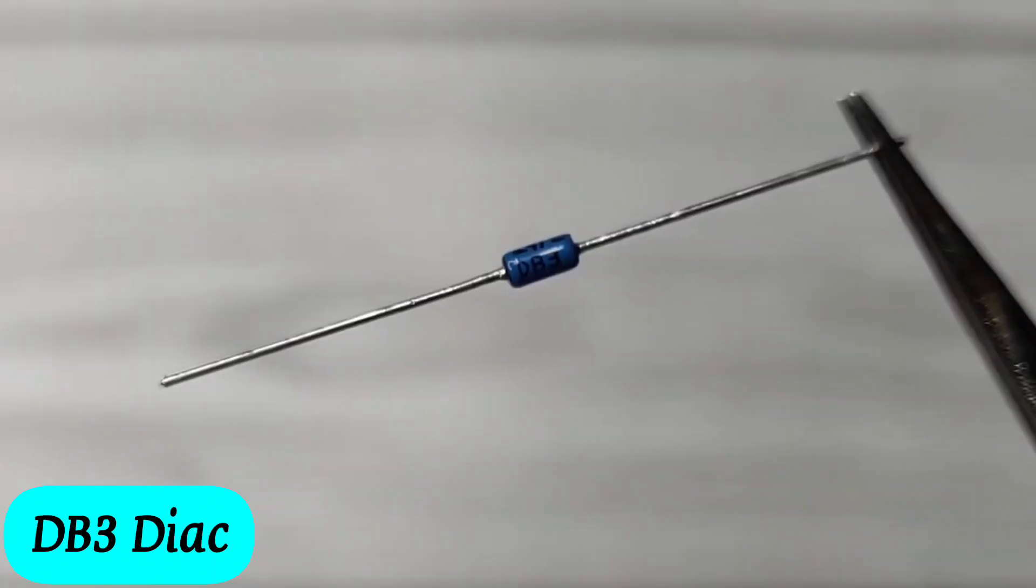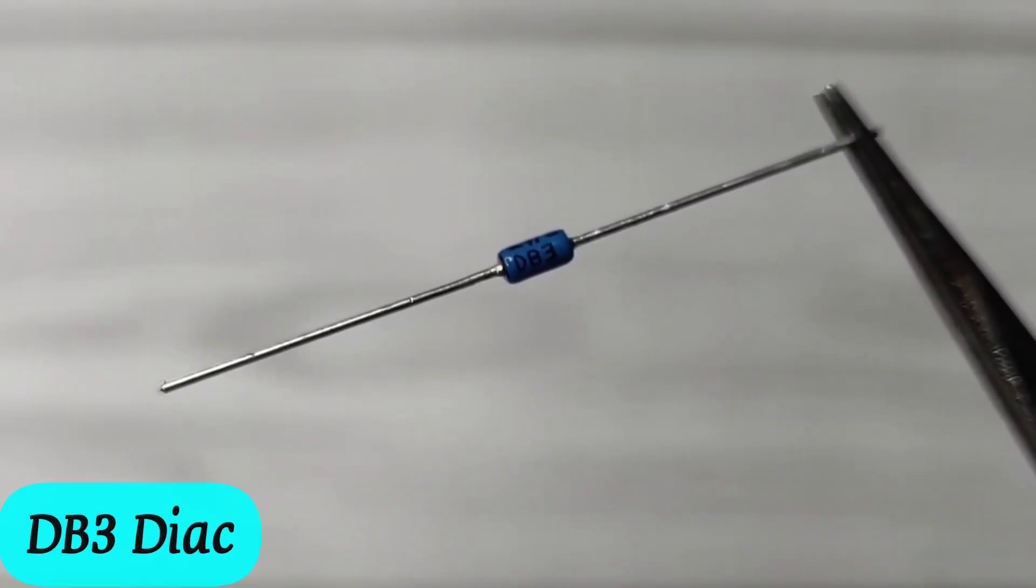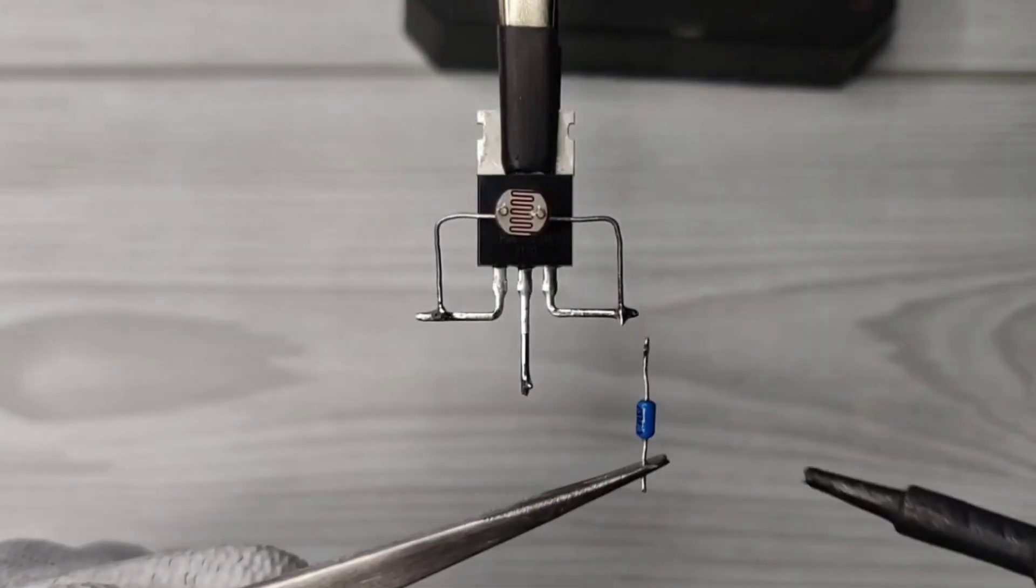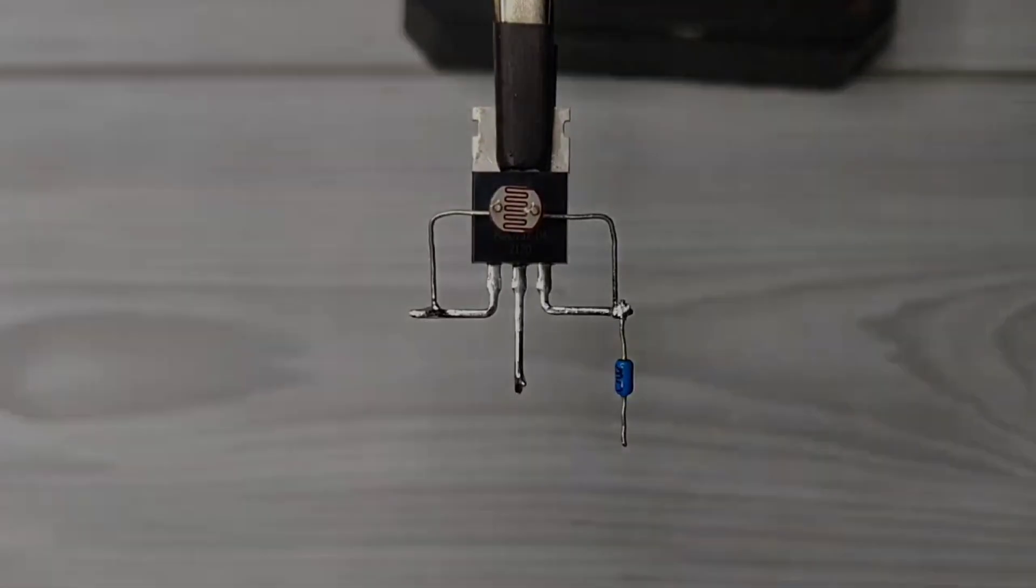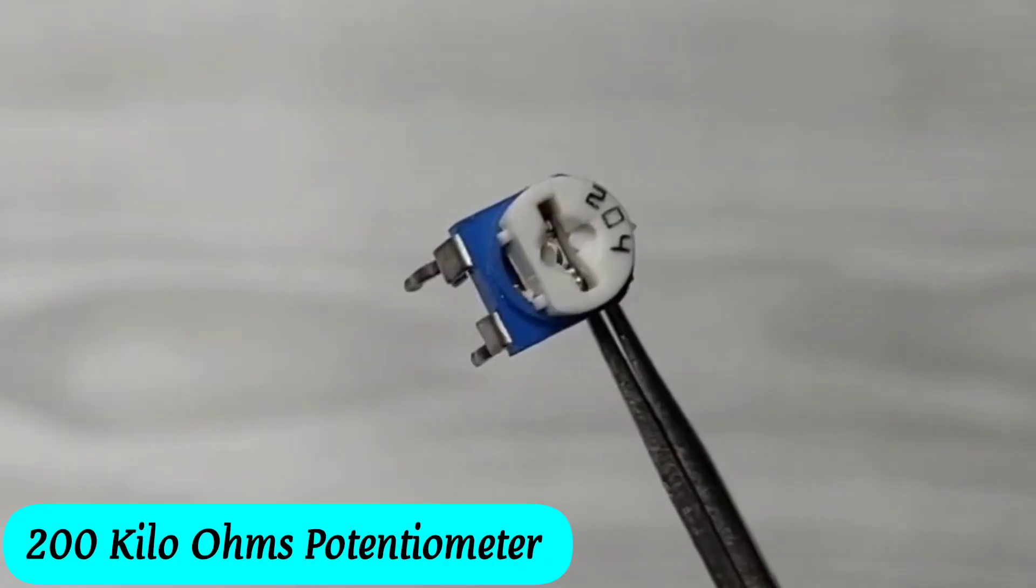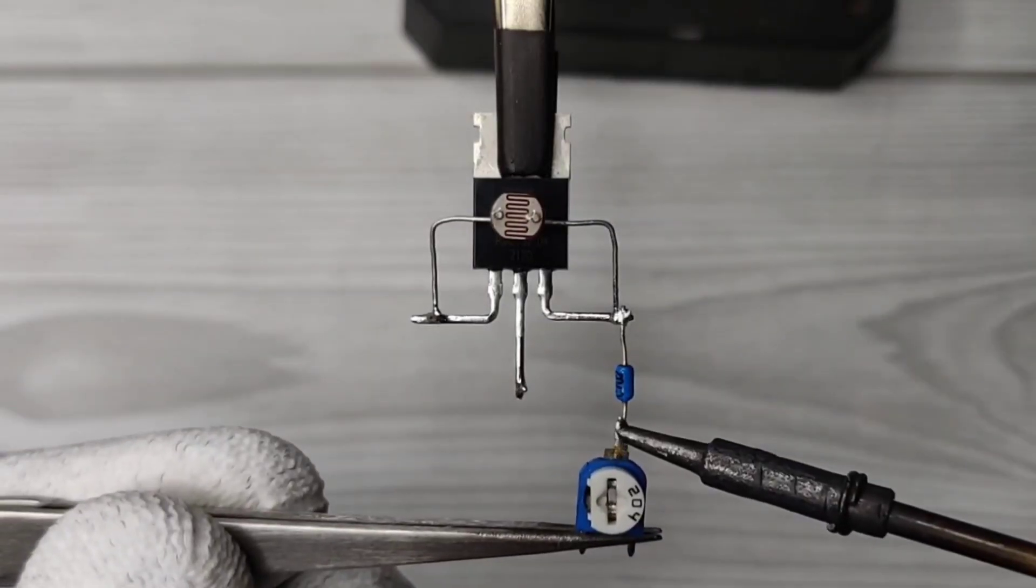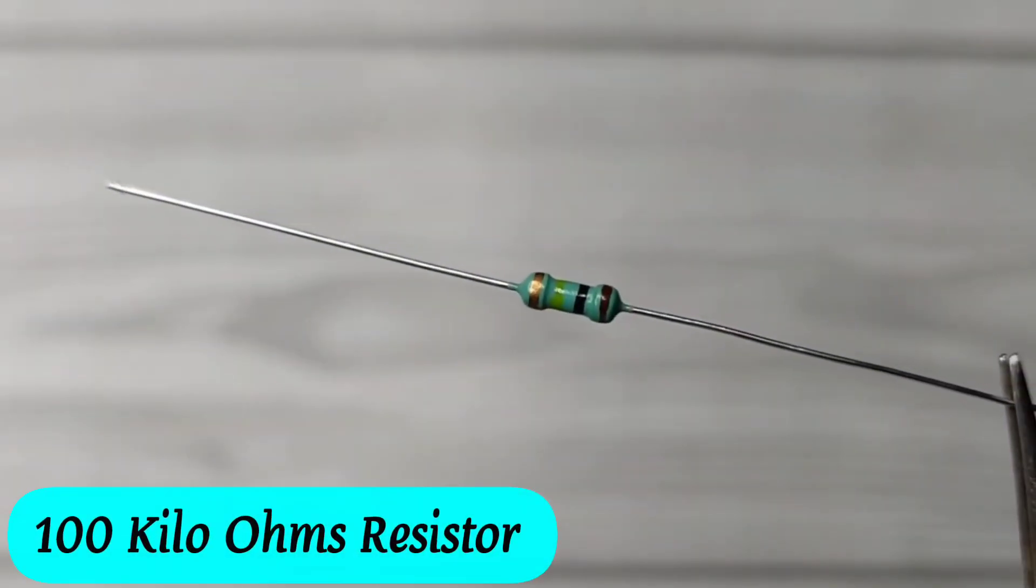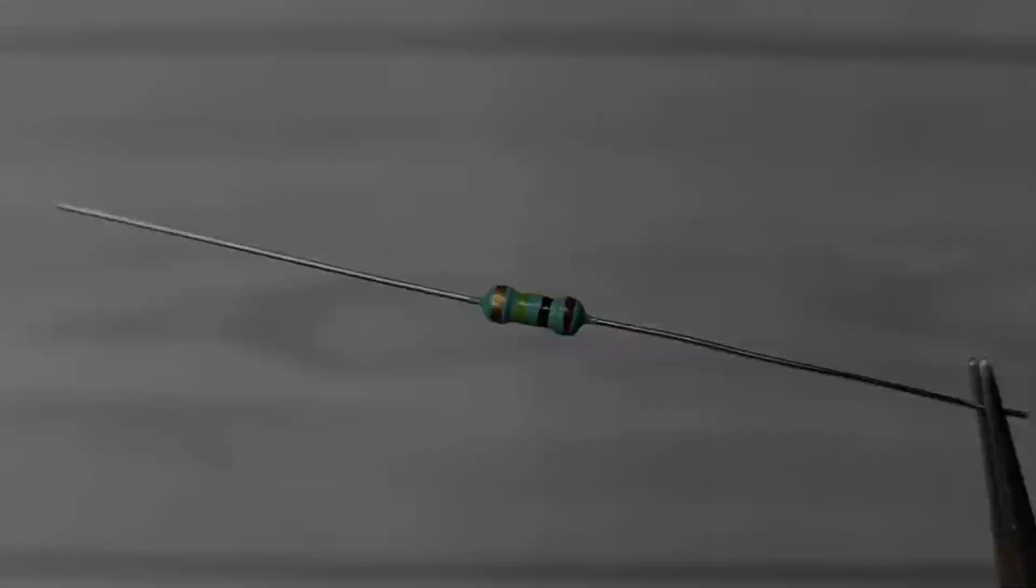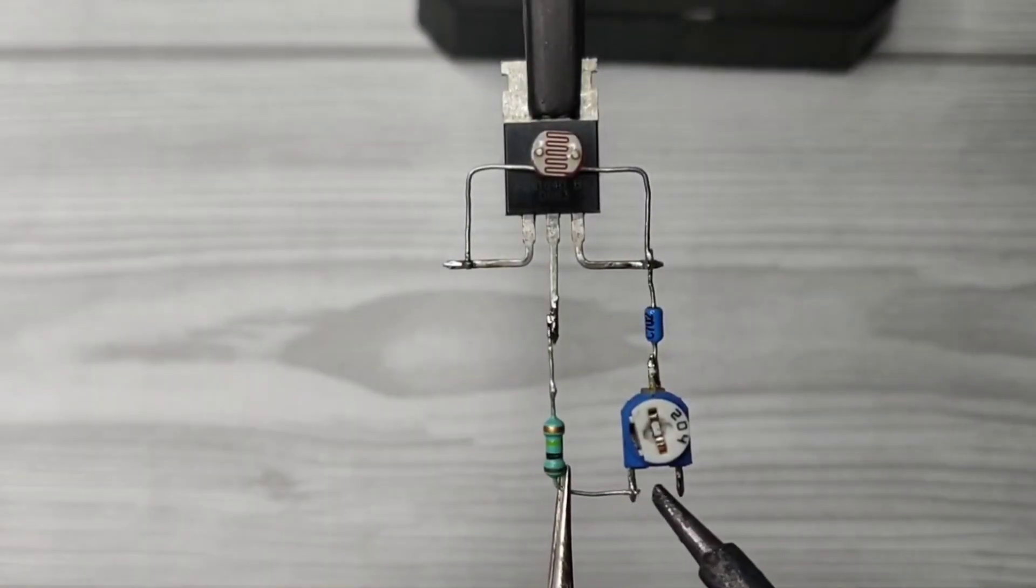Take a DB3 Diac, solder with pin 3 of Triac. Take a 200 ohms potentiometer, solder with Diac. Now use a 100 kilo ohms resistor, solder between pin 2 of Triac and potentiometer.